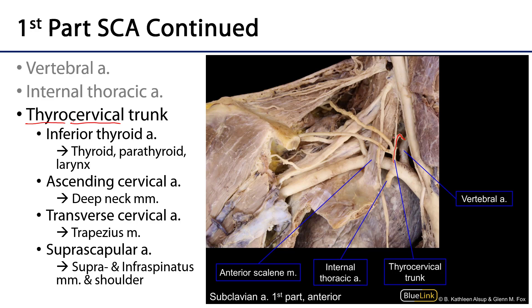The first branch is the inferior thyroid artery, which ascends superiorly and medially to serve the thyroid gland. It is also the dominant blood supply to the parathyroid glands and serves the larynx via an inferior laryngeal artery, though that branching point is not visible here.